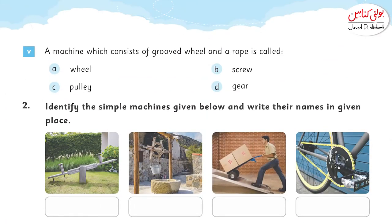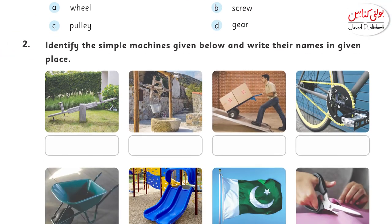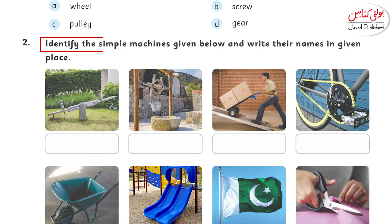Turn to page number 64. Question 5: a machine which consists of a grooved wheel and a rope — ek machine jiske andar ubhaar wale wheels hote hain aur uske saath ek rassi hoti hai — woh kaun si category ki machine hai? Options are wheel, screw, pulley, or gear. The right answer is pulley.